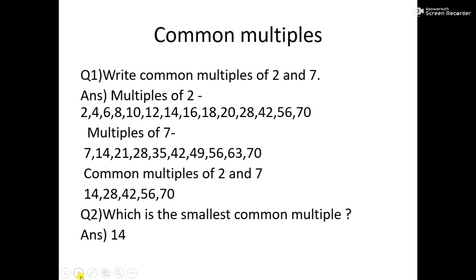Let's go ahead and write common multiples of 2 and 7. First of all, we will write all multiples of 2: 2, 4, 6, 8, 10, 12. All these numbers can be divided by 2, so all these numbers are multiples of 2.